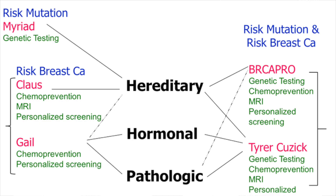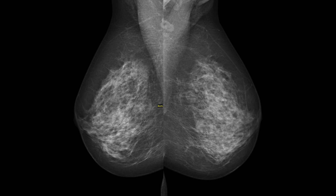For breast cancer risk models, we have different models available. The main ones to know include the Gale model, which is older but very validated. We also have models based on genetics and comprehensive models that try to include different factors when assessing breast cancer risk in patients.